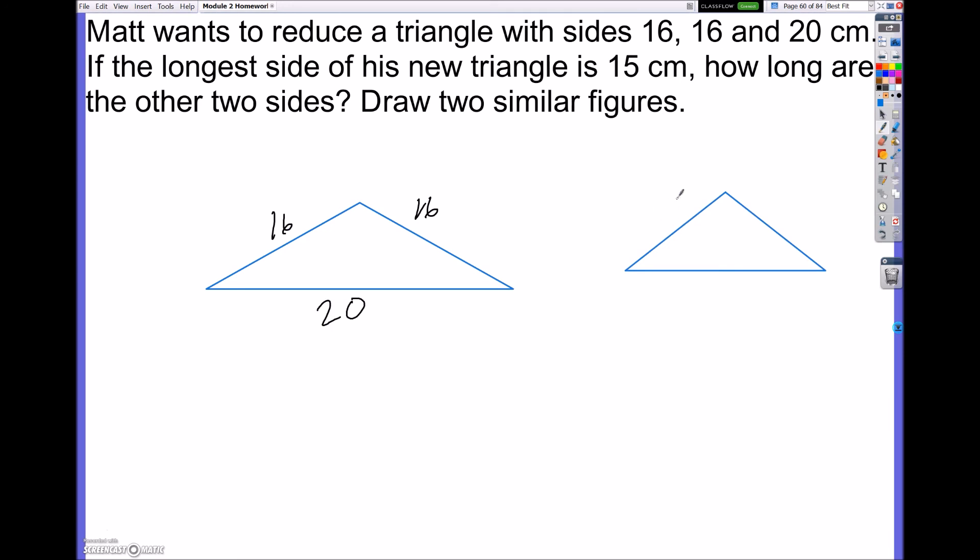So my first one, it says I have these two sides that are 16 with the longest side of 20. It says if the longest side of the new triangle is 15, what are the lengths of the two shorter sides? Well, it's not too bad to figure that out because all I need to do is solve for one of these sides. So if 15 corresponds with 20, all I need to do then is correspond X with 16.